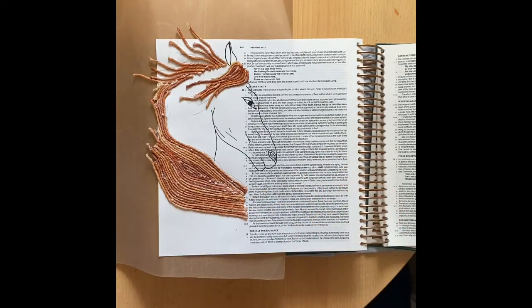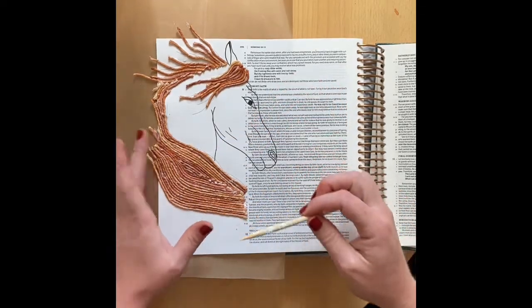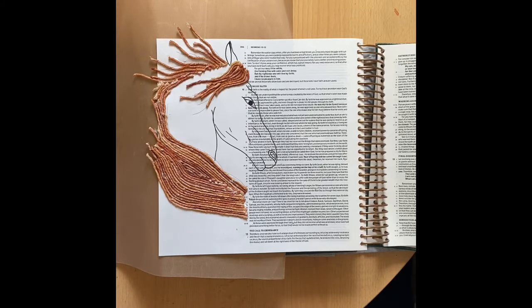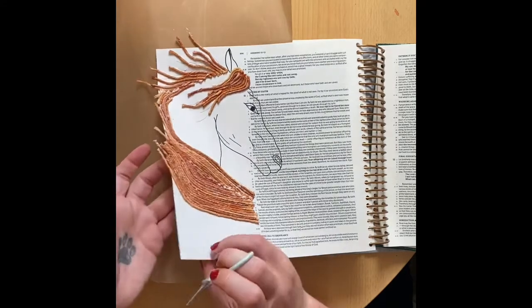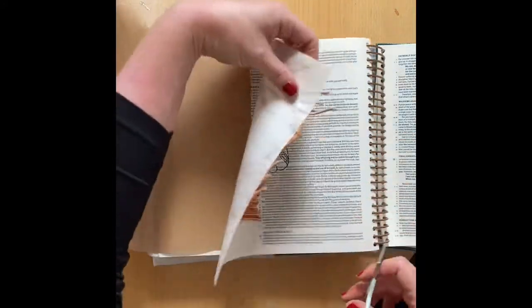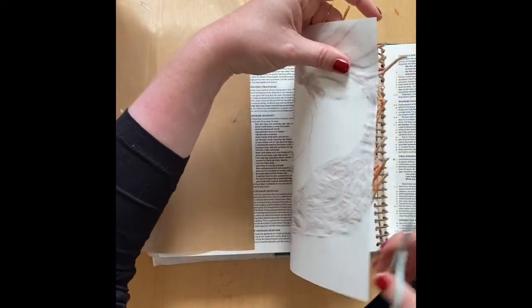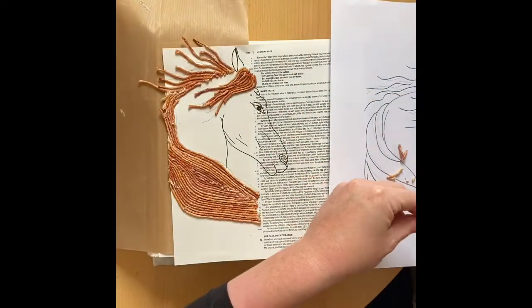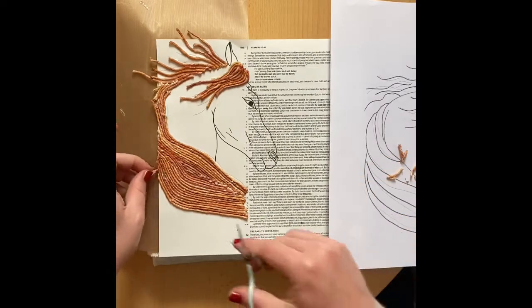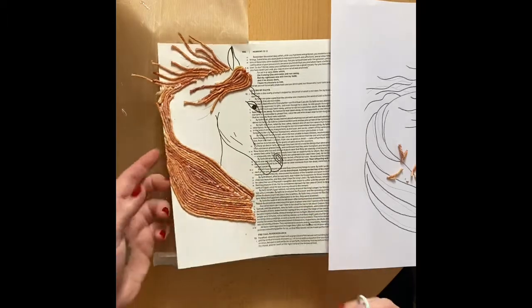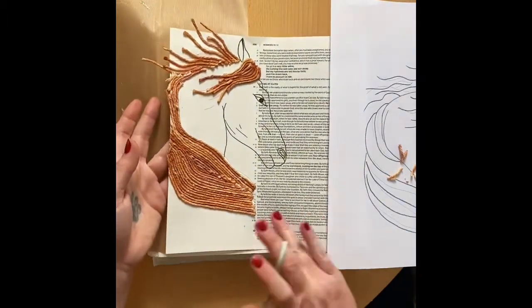Therefore, since we are surrounded by such a great cloud of witnesses, let us throw off everything that hinders and the sin that so easily entangles and let us run with perseverance the race marked out for us. Fixing our eyes on Jesus, the pioneer and perfecter of faith for the joy set before him. He endured the cross, scorning its shame and sat down at the right hand of the throne of God.